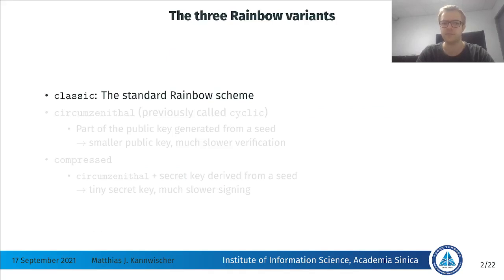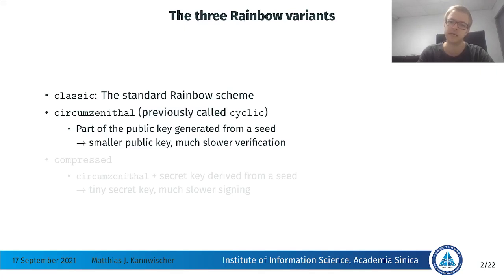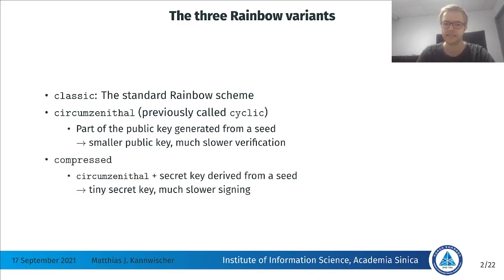Rainbow comes in three variants. The first one is called Classic — that's the standard Rainbow scheme. The second is called CC, previously called Cyclic. The idea here is that we resample part of the public key from the seed, which makes the public key quite a bit smaller, but also leads to much slower verification because you first have to sample this part of the public key, which is quite expensive. The third variant is Compressed, which is basically CC plus we sample the entire secret key from the seed, which leads to a tiny secret key — basically just a seed — but also much slower signing, because we first have to sample the entire secret key.